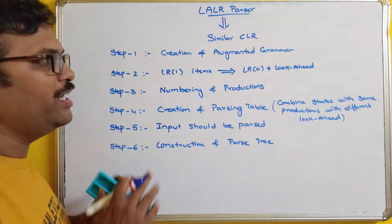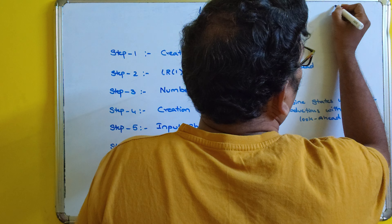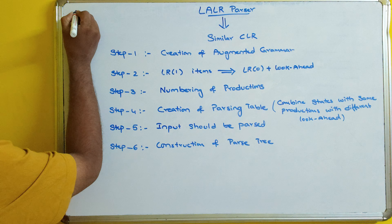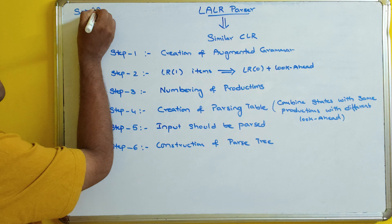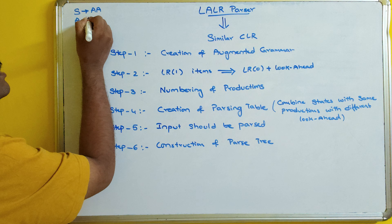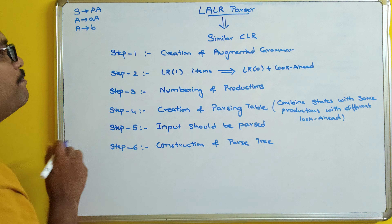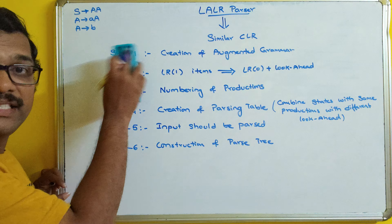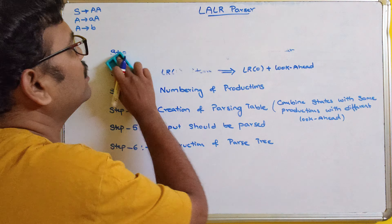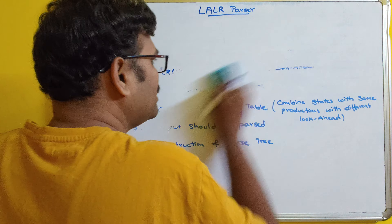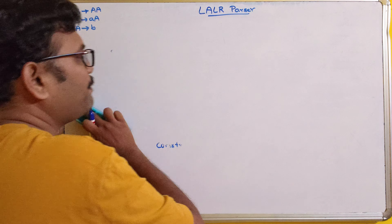Now we will take an example. I will take the productions: S tends to A, A tends to small a capital A, and capital A tends to small b. Let us construct the parse state for the same example which we have taken for the CLR parser.